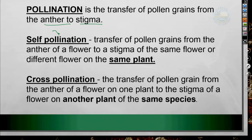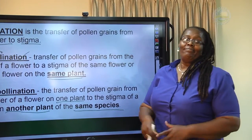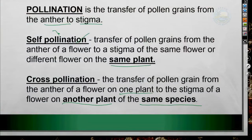The definition: self-pollination is the transfer of pollen grains from the anther of a flower to the stigma of the same flower or a different flower on the same plant. Cross-pollination is the transfer of pollen grain from the anther of a flower on one plant to the stigma of a flower on another plant of the same species. These definitions you must know.